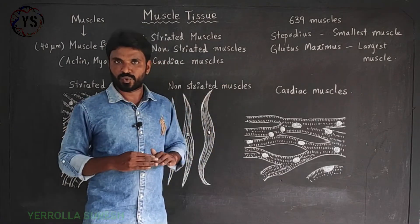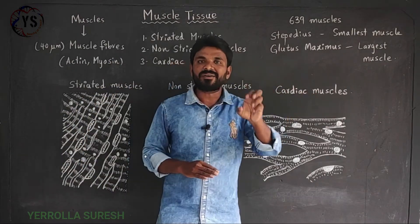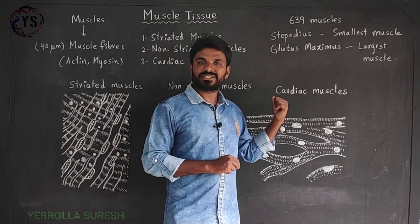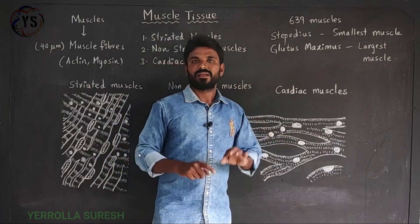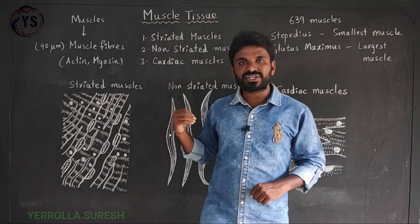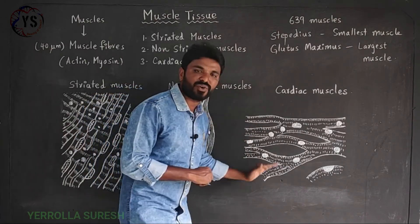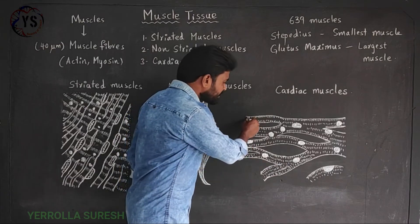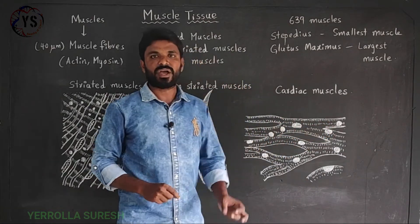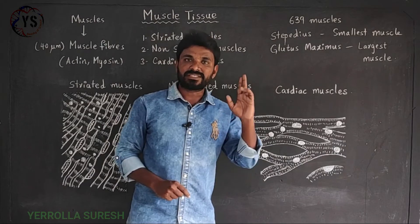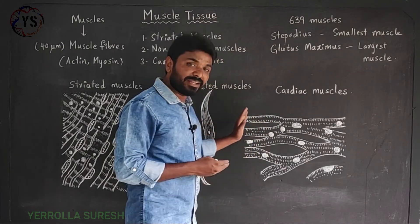Cardiac muscles are the muscles present only in the heart. Cardiac muscles resemble striated muscles in their structure and resemble non-striated muscles in their function. In their structure, cardiac muscles have striations on their surface and contain more nuclei, which are characteristic features of striated muscles. That is why they resemble striated muscles in their structure.